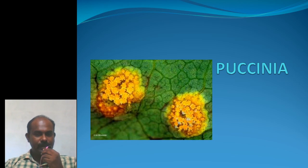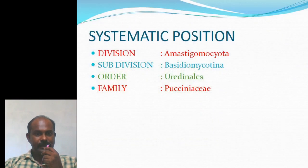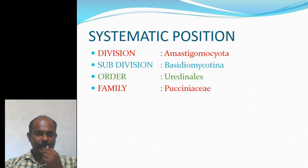Good morning friends. Today we are going to discuss about Puccinia, which is another type that we have to study under the subdivision Basidiomycotina. This is the systematic position of Puccinia: it belongs to the division Amastigomycota, subdivision Basidiomycotina, order Uredinales, and family Pucciniaceae.